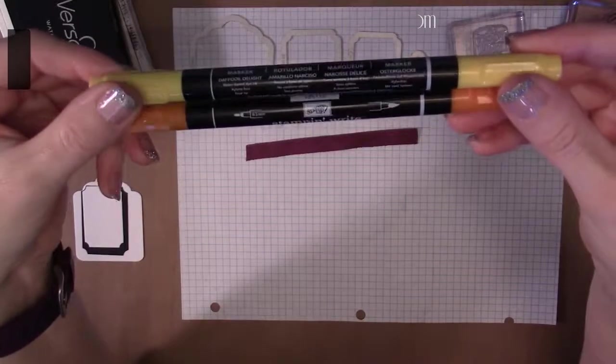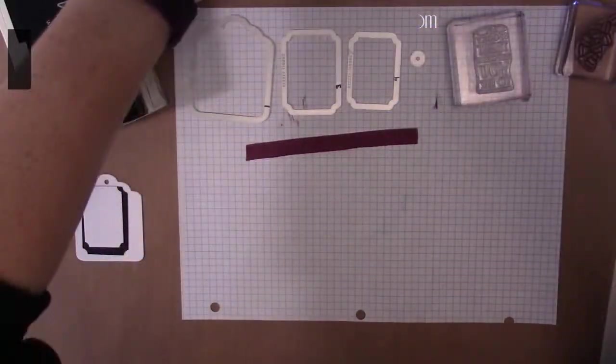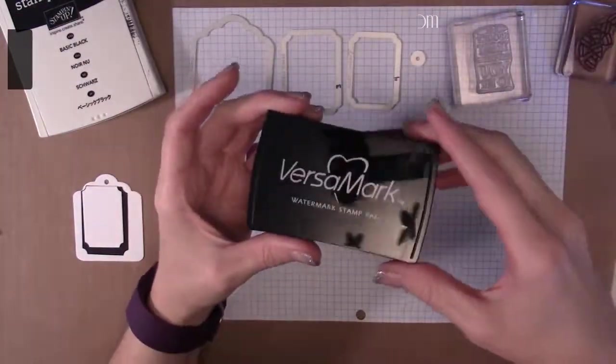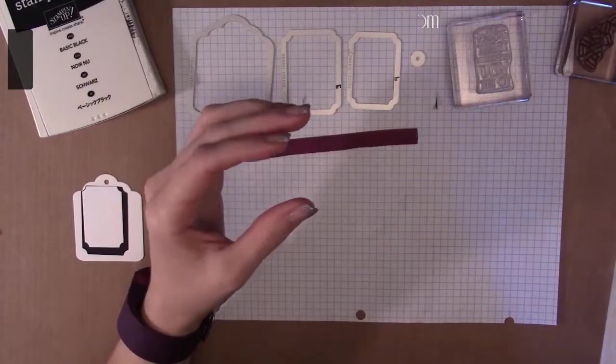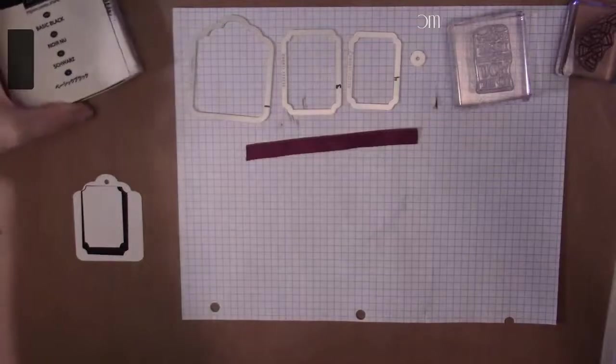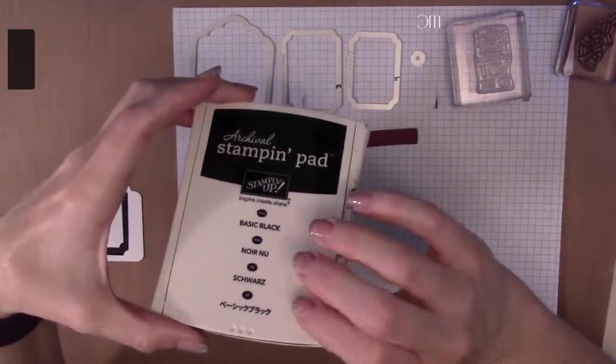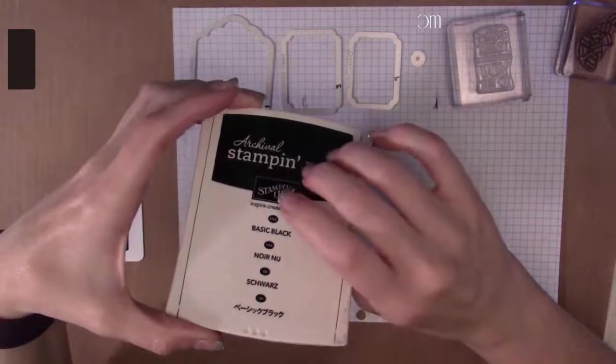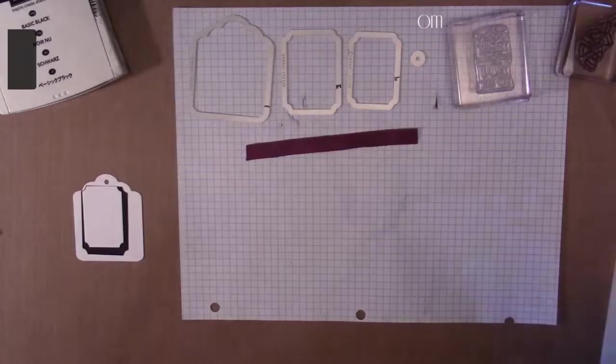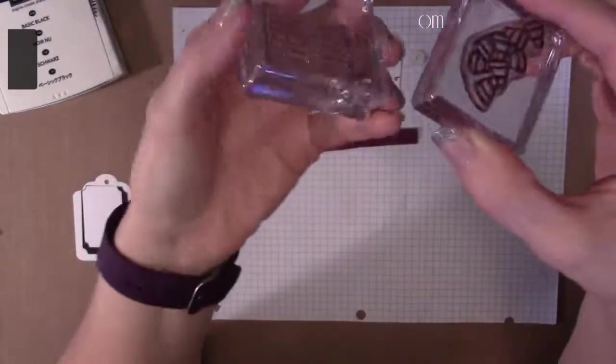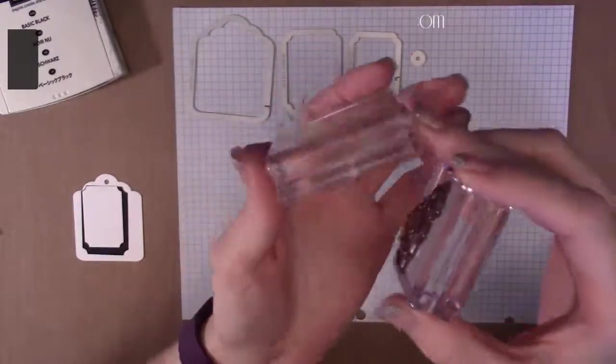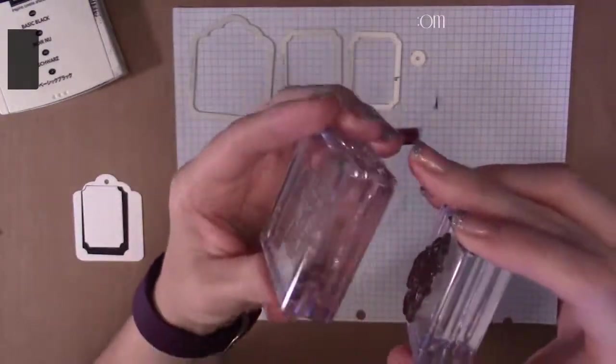We've got our Versamark and our embossing powder, so we're going to be doing some embossing. You'll need your heat tool, Basic Black Archival stamp pad. Anytime you're coloring it's good to have the Basic Black or the Basic Gray Archival because it's not going to run and bleed on you as you're coloring. I've got my stamps here on the Stampin Up block, got the candy corn on the B block and the sentiment on the C block. These are great blocks, highly recommend them.